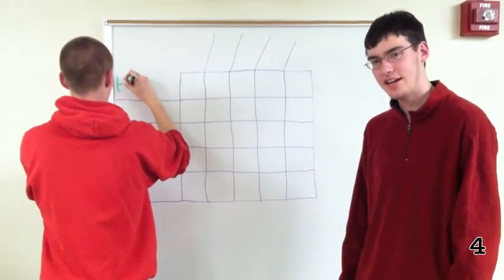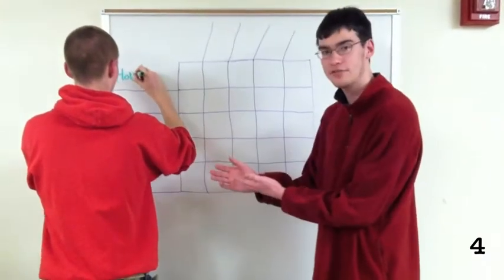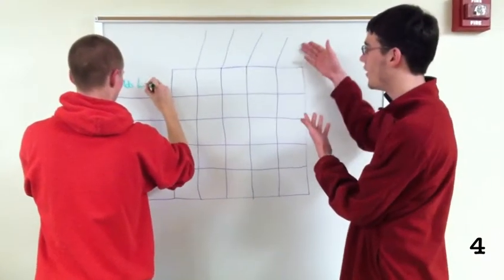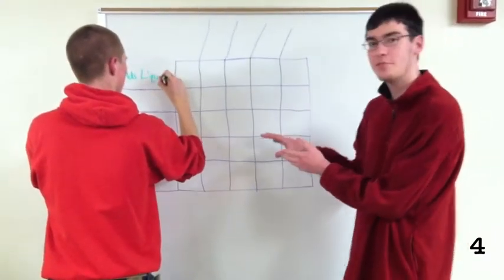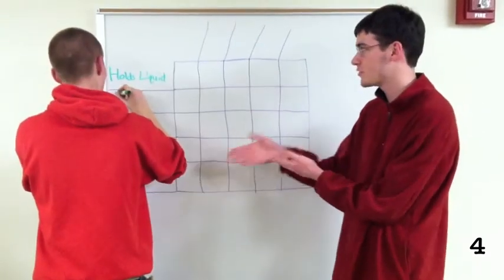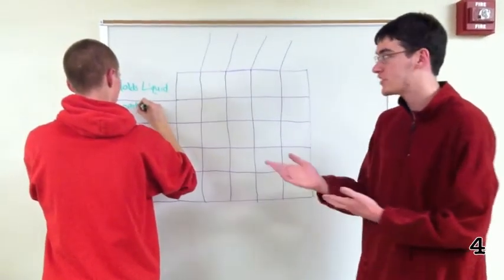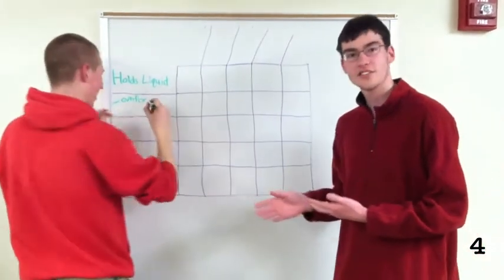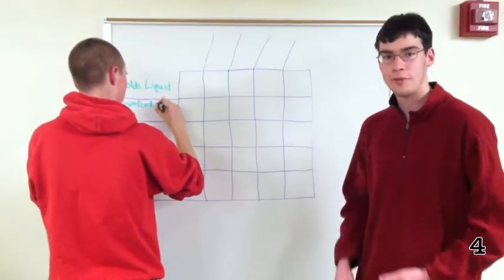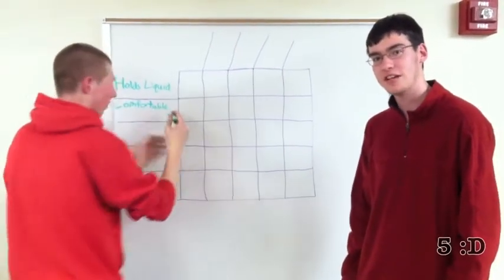The Needs Metrics Matrix is set up with the customer needs on the left, the specs above, and then a matrix in the middle where you can mark where the customer needs and specs line up. Right now, Tom is writing the customer needs for a water bottle using the Needs Metrics Matrix marker.